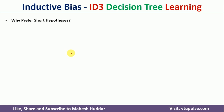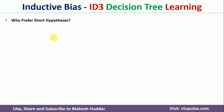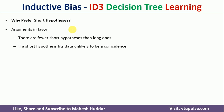Why should we prefer the shorter hypothesis? Let us say we concluded that we need to consider the shorter trees, or shorter learned parameters or hypothesis. Why should we prefer that particular short tree or short hypothesis? There are some arguments in favor of this. The first argument is there are fewer shorter trees compared to the long ones. In the real world, if you go on drawing decision trees, the number of short trees will be less compared to long trees, so it is definitely better to go with the shorter trees.